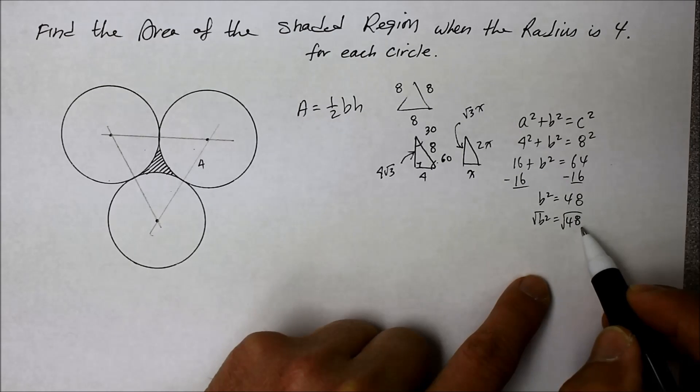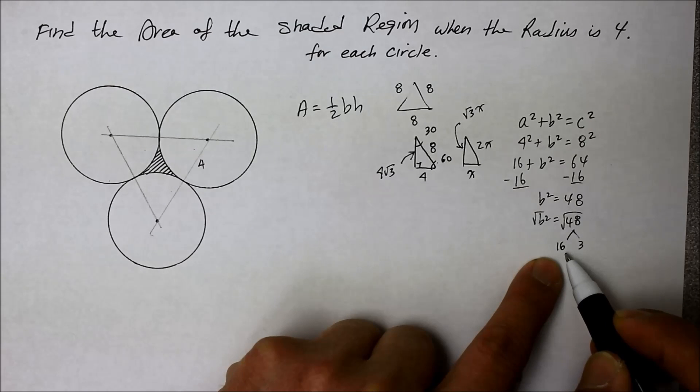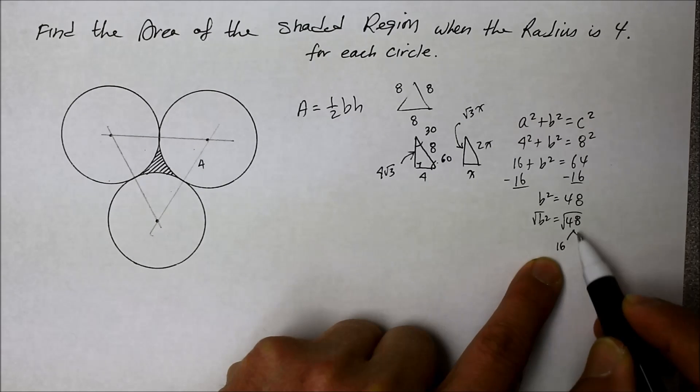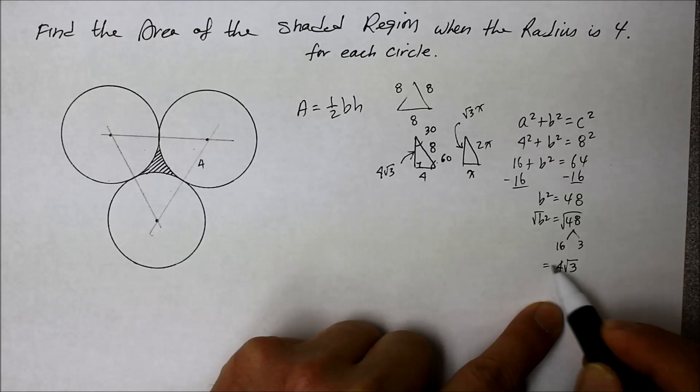Now you're going to solve for b by square rooting both sides of the equation. Well, 48 is 16 times 3. And I want 16 because it's a perfect square, because square root of 16 is 4. What remains inside a radical is 3. And that's the b.